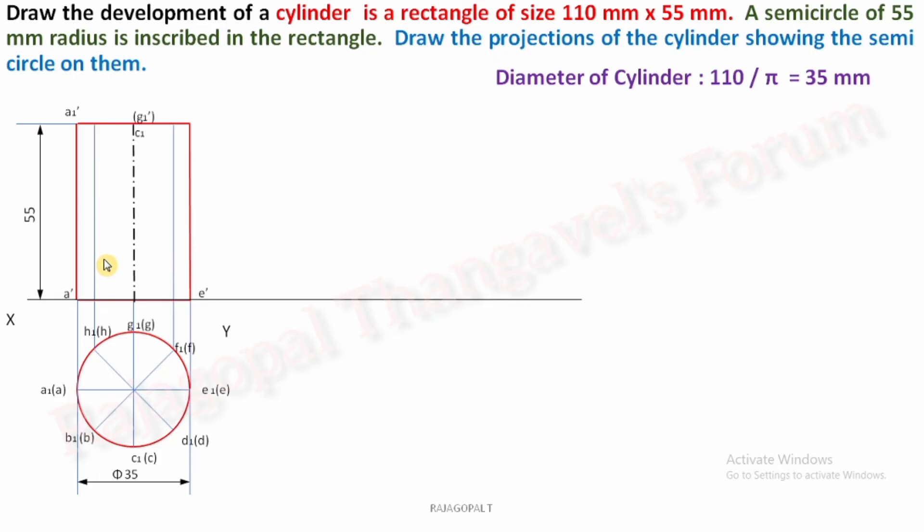Always remember it is a cylinder, only the boundary surface will be visible. This inner divisions for our convenience we are divided into eight parts. Okay, how we can complete the development now. So you know that how to draw the development of the cylinder, the total length is 110, what about height, it is 55. So this is the rectangle of 110 size, 110 length and 55.